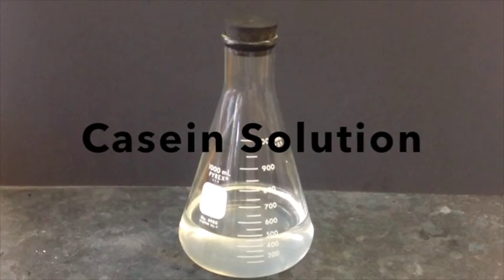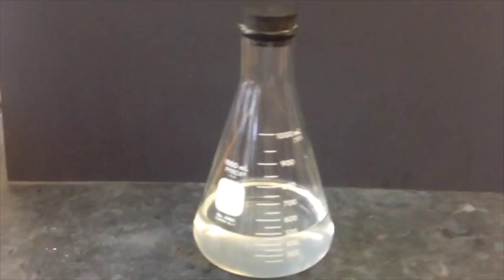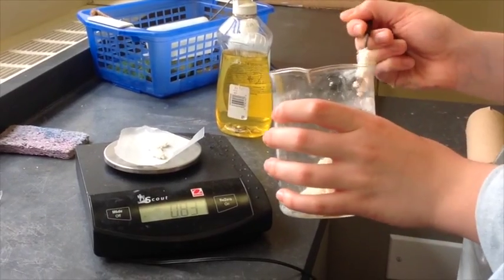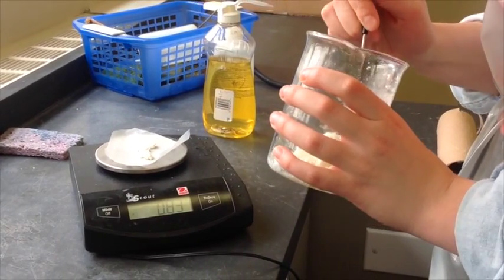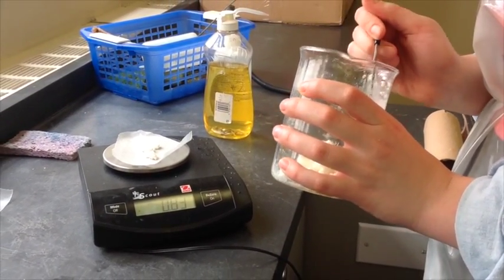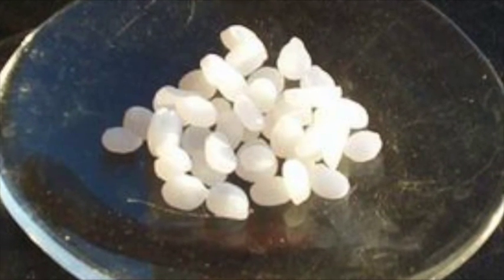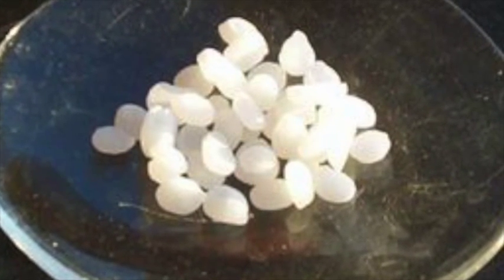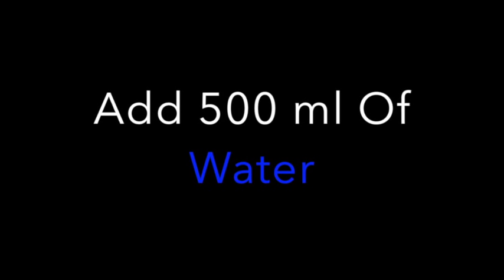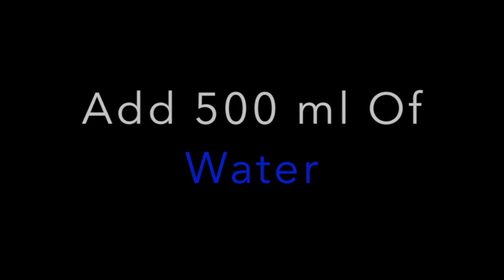Now I am going to make a casein solution from the casein I have just extracted. Step 1: You are going to weigh out 2.5 grams of the casein solid. Also measure out 2.5 grams of NaOH solid. Measure out 500 milliliters of water and add it to a flask. Now combine the NaOH, the water, and the casein solid in the flask.